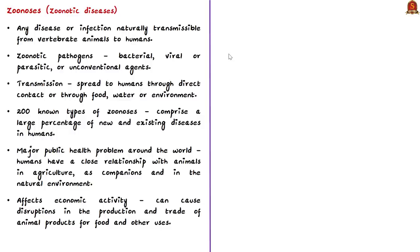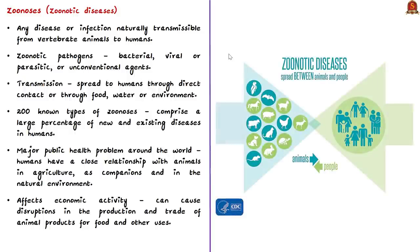A zoonotic disease is any disease or infection that is naturally transmissible from vertebrate animals to humans — for example, Ebola. Zoonotic pathogens may be bacterial, viral, or even parasitic, or sometimes involve unconventional agents. They can spread to humans through direct contact or through food, water, and environment. In short, zoonotic diseases are caused by germs that spread between animals and people. Even COVID-19 is considered zoonotic. There are around 200 known types of zoonotic diseases, comprising a large percentage of newly identified infectious diseases as well as existing diseases in humans.